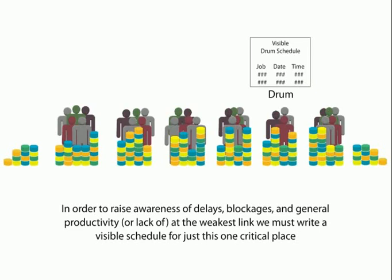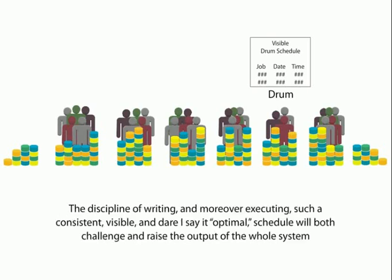If we have to synchronize everything to the drum, it is natural that we should have worked in detail on what this drum can do or can't do. In this approach to managing operations, we develop a detailed, visible schedule for the drum. Many times this schedule is also called the drum because it tells the whole company what this resource is doing and at what speed, and everybody else just needs to synchronize itself. The discipline of writing and executing such a consistent, visible, and optimal schedule will both challenge and raise the output of the system.